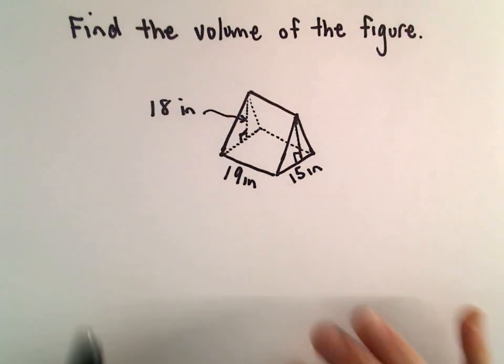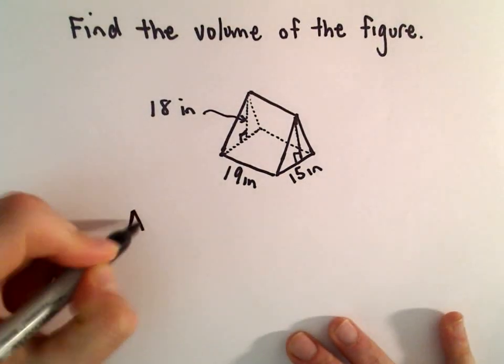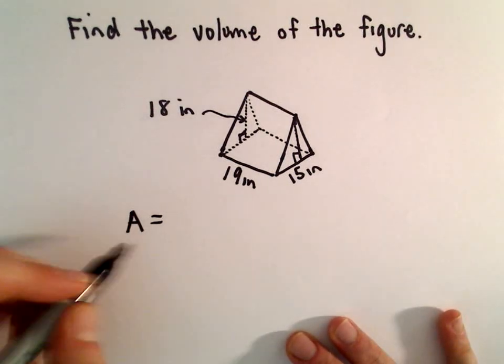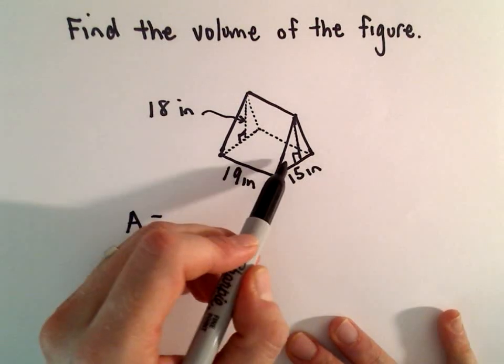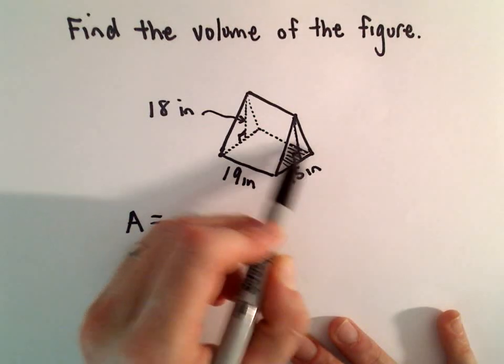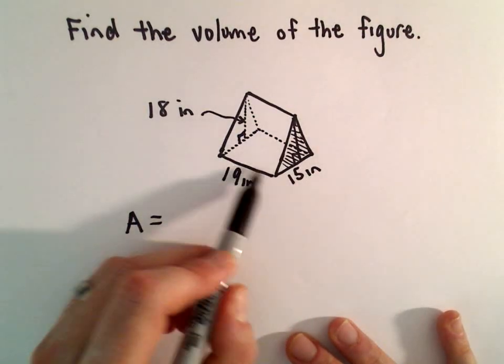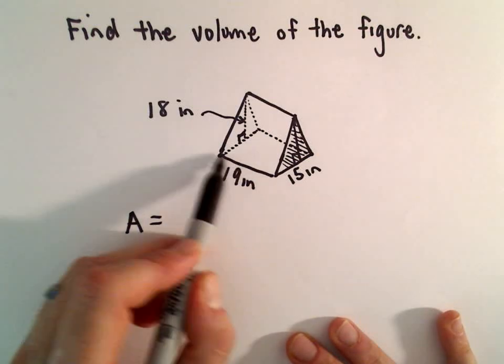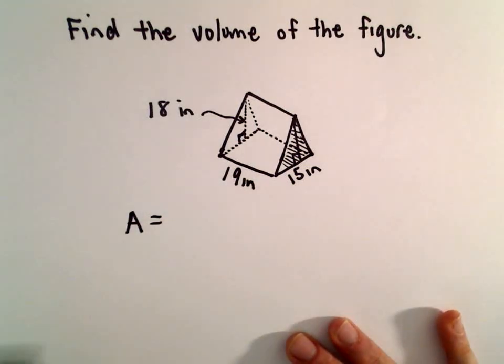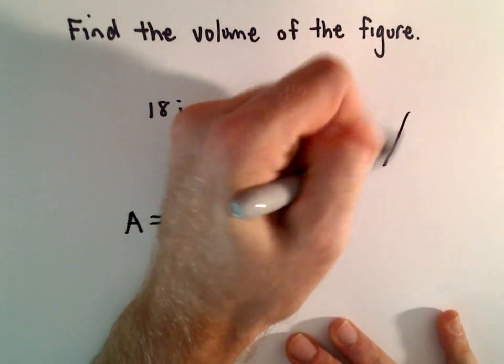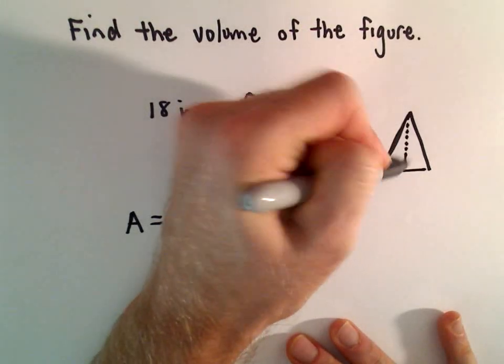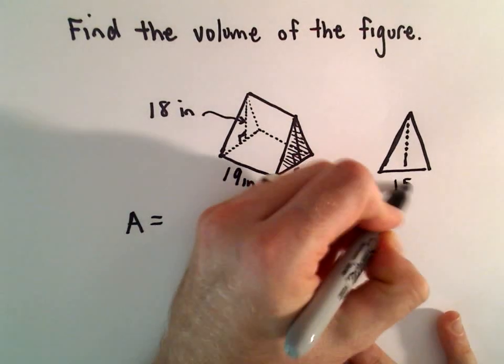And then it has a length of 19 inches. So again, to find the volume, first what I'm going to do is I'm going to find the area. I'm going to think about the front part as being one of the bases, and then I'm going to multiply that by the height or the length of my little tent here, which will be 19.